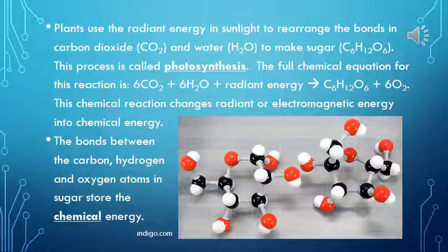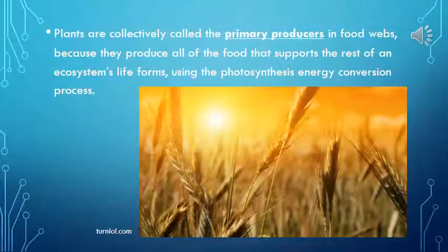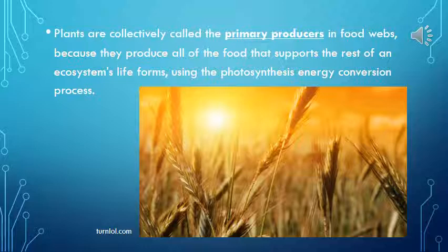The bonds between the carbon, hydrogen, and oxygen atoms in sugar store the chemical energy. Plants are collectively called the primary producers in food webs because they produce all of the food that supports the rest of an ecosystem's life forms using the photosynthetic energy conversion process.